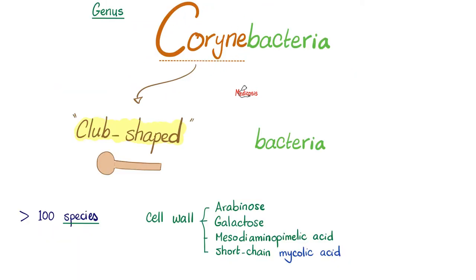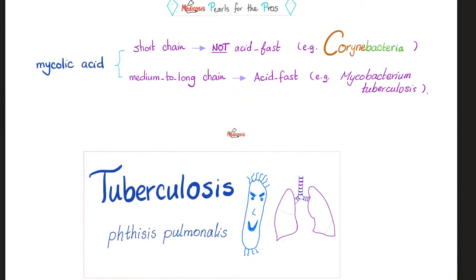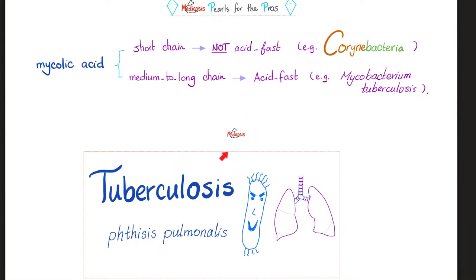The word Corynebacterium means club-shaped. Corynebacterium diphtheriae has mycolic acid, but it's short-chain mycolic acid, and that's why it is not acid-fast. Contrast that with Mycobacterium tuberculosis, which has long-chain mycolic acid and therefore is acid-fast. Medicine makes so much sense once you understand what you're talking about.